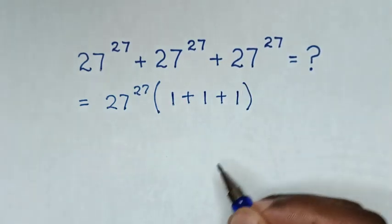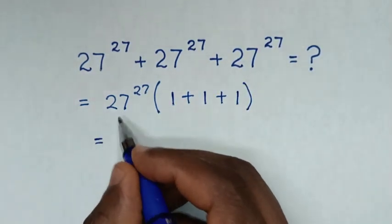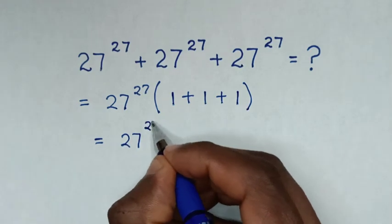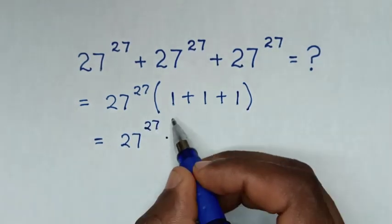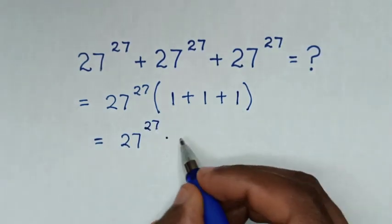In bracket, then it will be equal to 27 to the power of 27 times 1 plus 1 plus 1, which is 3.